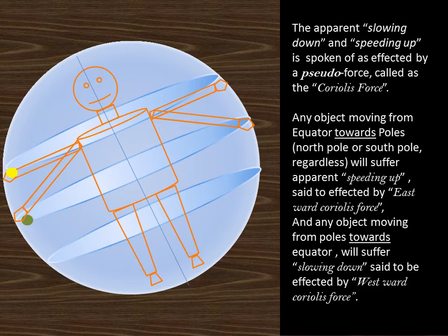Any object moving from equator towards poles (north pole or south pole, regardless) will suffer apparent speeding up, said to be affected by eastward Coriolis force. And any object moving from poles towards equator will suffer slowing down said to be affected by westward Coriolis force.